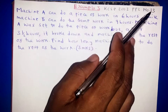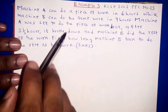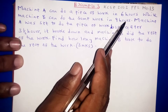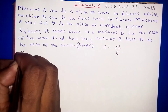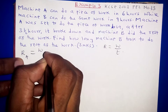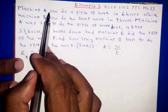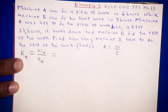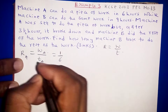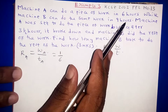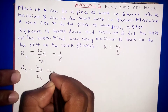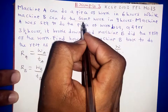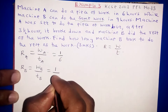Now we have example 3, which is also a past KCCE question done in 2003, paper 2, question number 13. The question reads that machine A can do a piece of work in six hours, while machine B can do the same piece of work in nine hours. The rate for machine A is one divided by six, and the rate for machine B is one divided by nine.